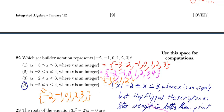And that's actually the same thing as writing negative 2 is less than or equal to x, which is less than or equal to 3. So x is greater than or equal to negative 2, and it's less than or equal to 3.